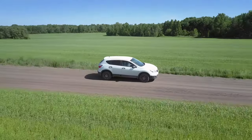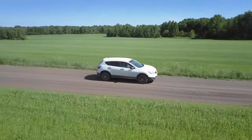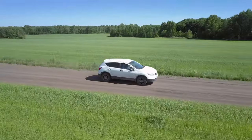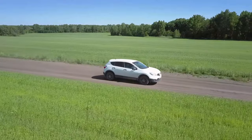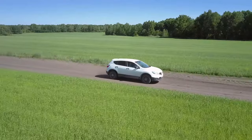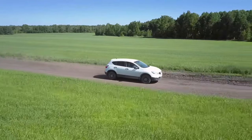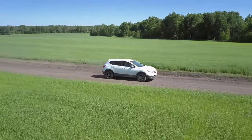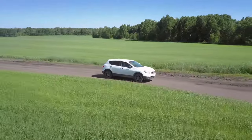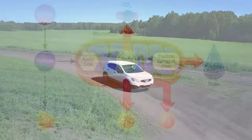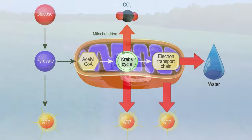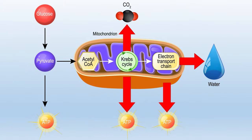How do you make a car move? You burn gasoline in the engine, of course. The energy from burning gasoline physically moves parts of the engine, which send power through the transmission to the wheels. The mitochondria within cells are essentially tiny engines that burn glucose to power all of the processes that cells need to survive. In fact, mitochondria and the process of aerobic respiration that they employ are much more efficient than a combustion engine.